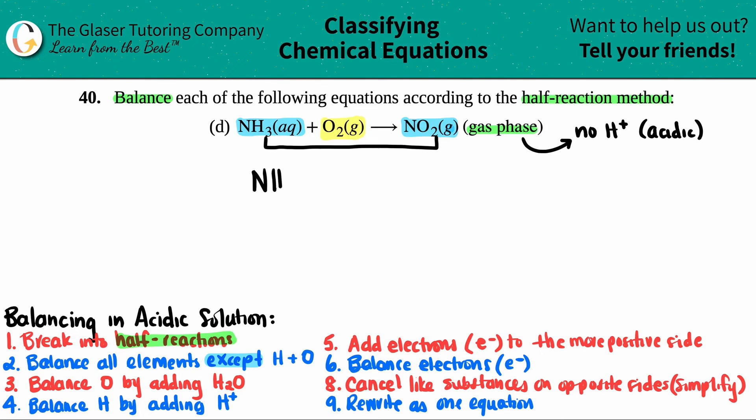The first one is NH3 aqueous yields NO2, and that's a gas. And then my second half-reaction is O2, which will yield us nothing at the moment, because I don't have anything here. But it will work itself out in the end. Okay, so this part is done.